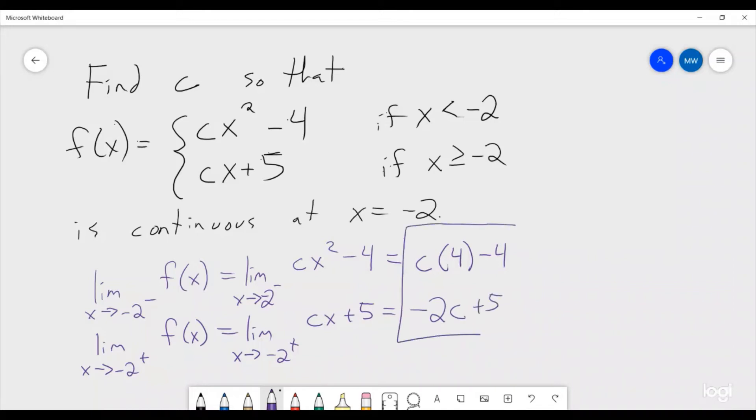So that means that these two things have to be equal in order for this to be continuous. So we set those equal and we get 4c minus 4 is equal to 5 minus 2c. And then solving for c we can add the two c's so we get 6c is equal to 9. So c is equal to 9 over 6 which is equal to 3 halves or 1.5.